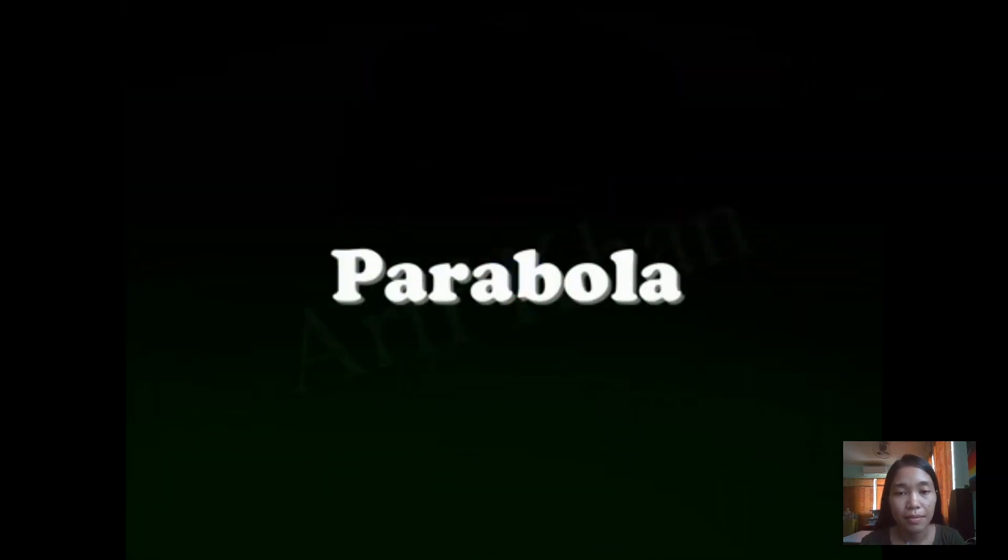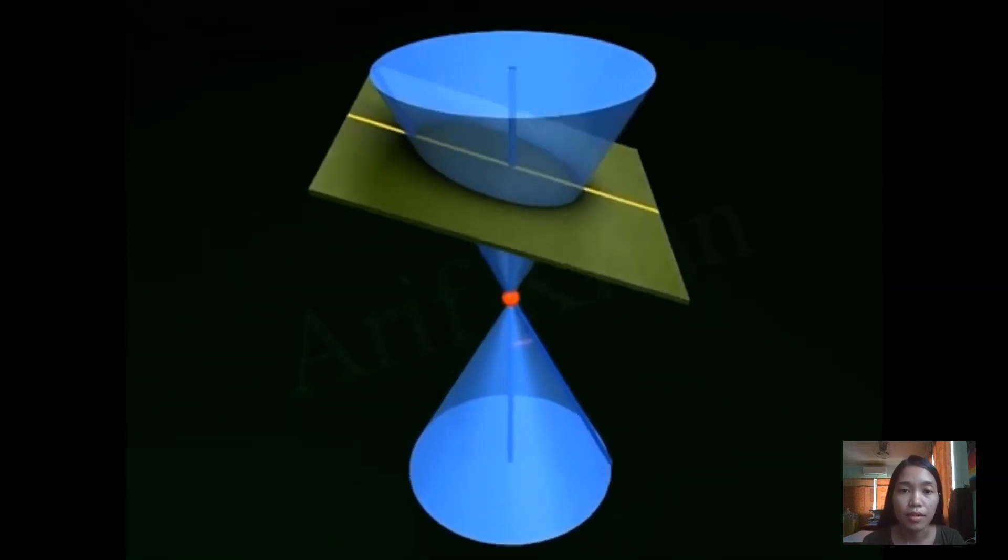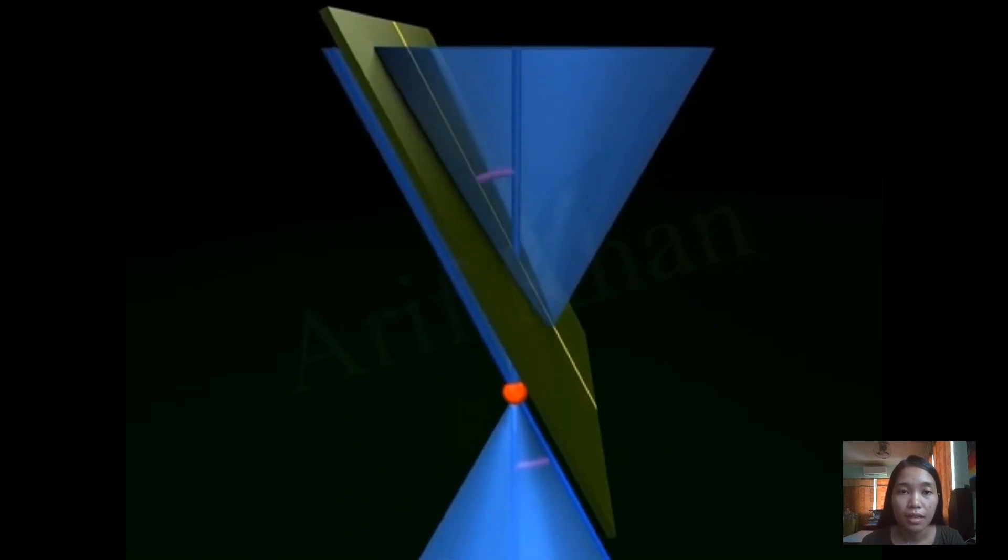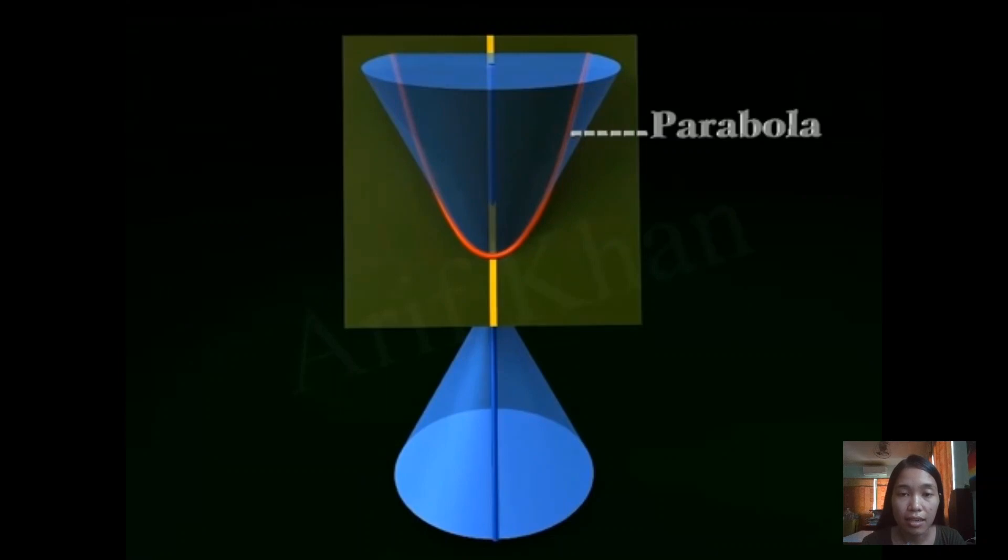Next, parabola. You already learned this in grades 9 and 10. This is how it was formed, the concept. If the plane was positioned to the double right circular cone so that the angle from the vertical axis is exactly the same value as the vertex angle, we will have an open curve. That open curve we call parabola. That's the open curve, the intersection of the plane and the conic section, that's the parabola.